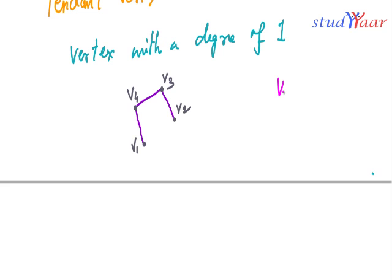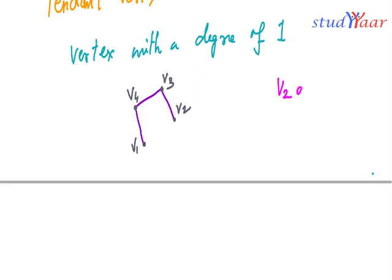V2 is a pendant vertex. What about V1? Even V1 has degree 1 because there is only 1 edge incident on V1. V4 has degree 2 because of 2 edges, and V3 also has degree 2 because of 2 edges. So V2 and V1 are pendant vertices.